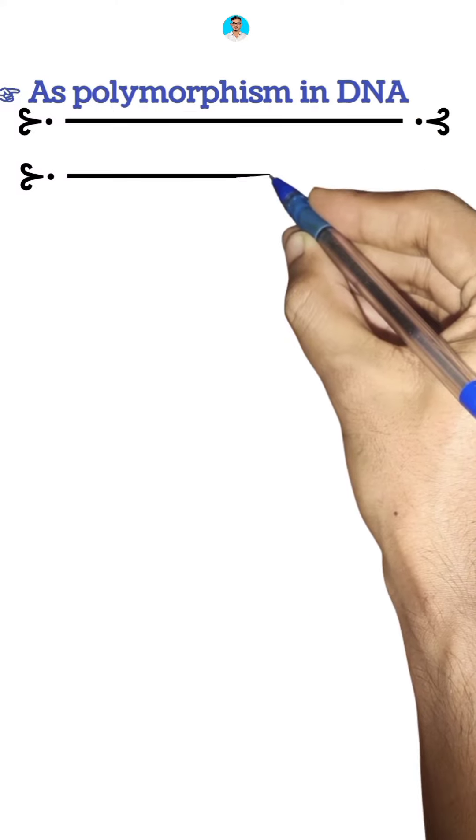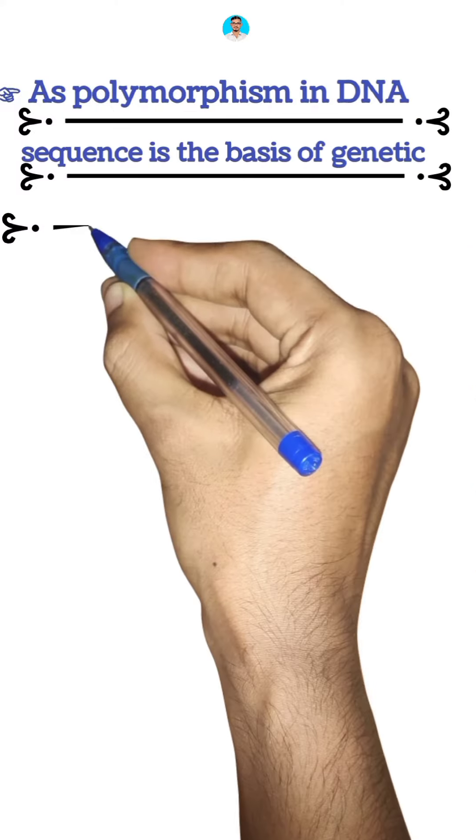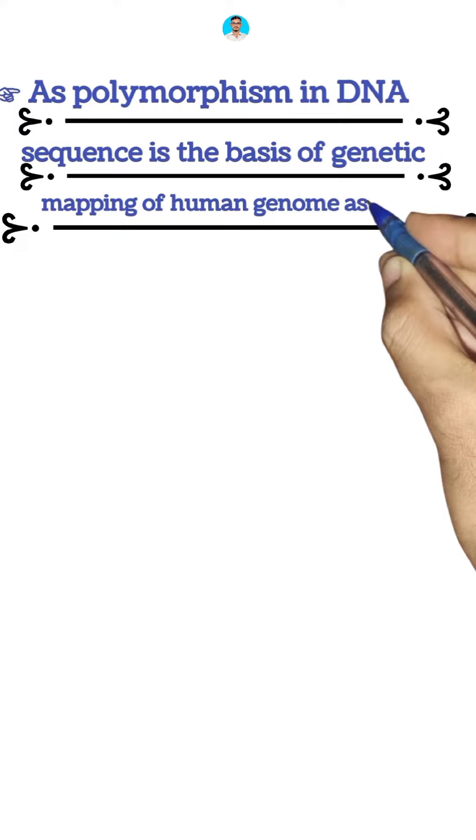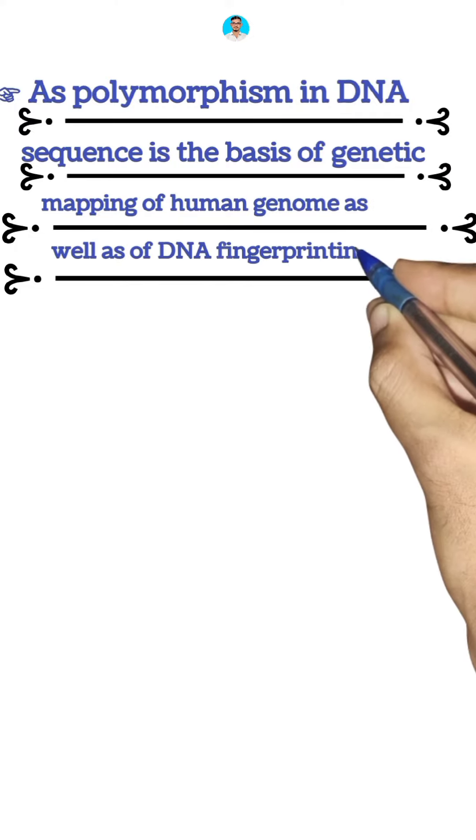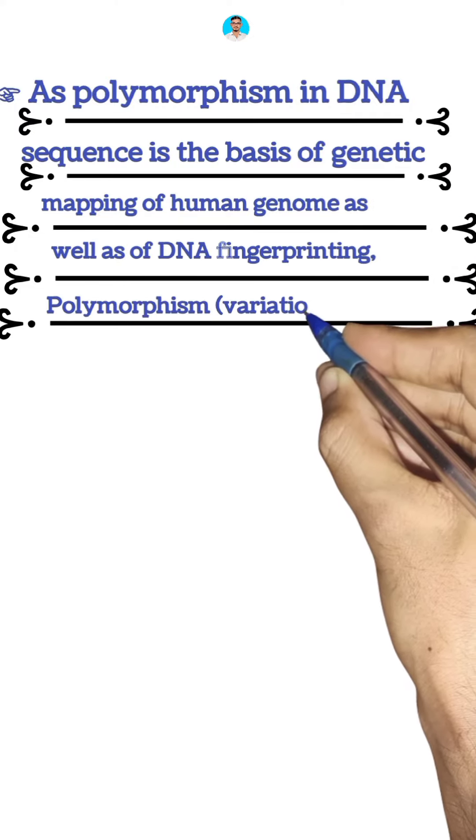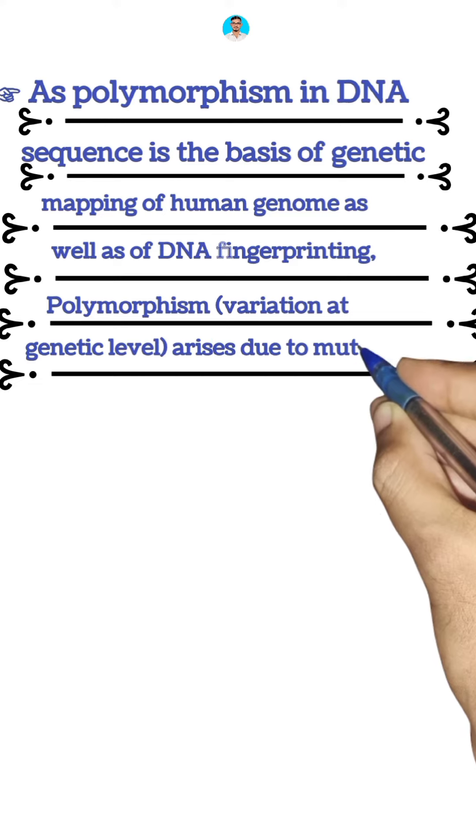As polymorphism in DNA sequence is the basis of genetic mapping of human genome as well as DNA fingerprinting, polymorphism (variation at genetic level) arises due to mutation.